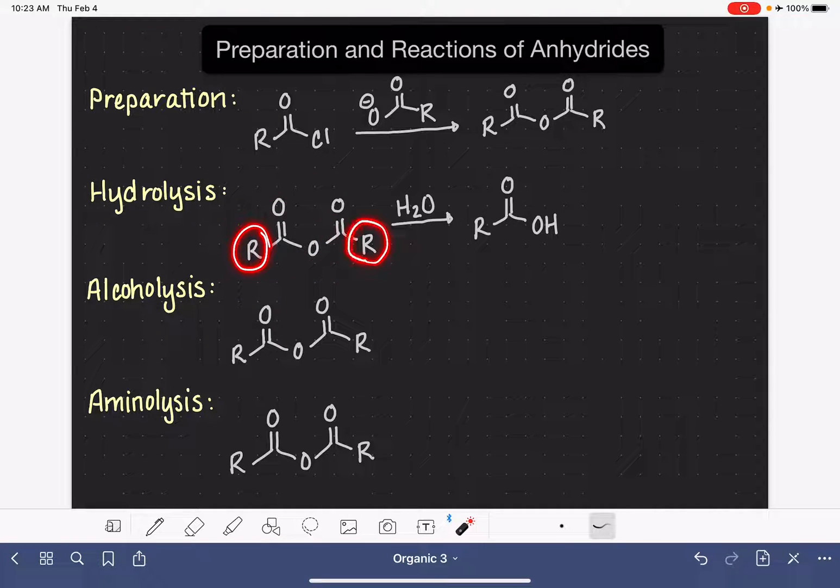If the two R groups of the anhydride are identical to each other, then there will only be one type of molecule synthesized in this reaction. But if the two R groups are different from each other, so for example, if this R group was something different, then you would need to draw both of the products of the reaction. Both possibilities for the two different products. But like I said, typically on paper, you're going to be dealing with symmetrical anhydrides.